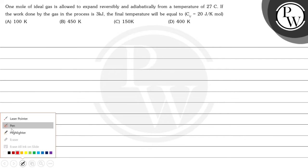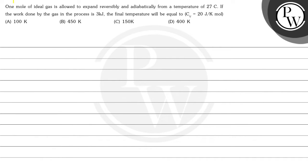Hello bachyo, let's read this question. 1 mole of ideal gas is allowed to expand reversibly and adiabatically from a temperature of 27 degrees centigrade. If the work done by the gas in the process is 3 kilo joule, the final temperature will be equal to. CV is equal to 20 joule per Kelvin per mole. Options are 100 Kelvin, 450 Kelvin, 150 Kelvin, 400 Kelvin.